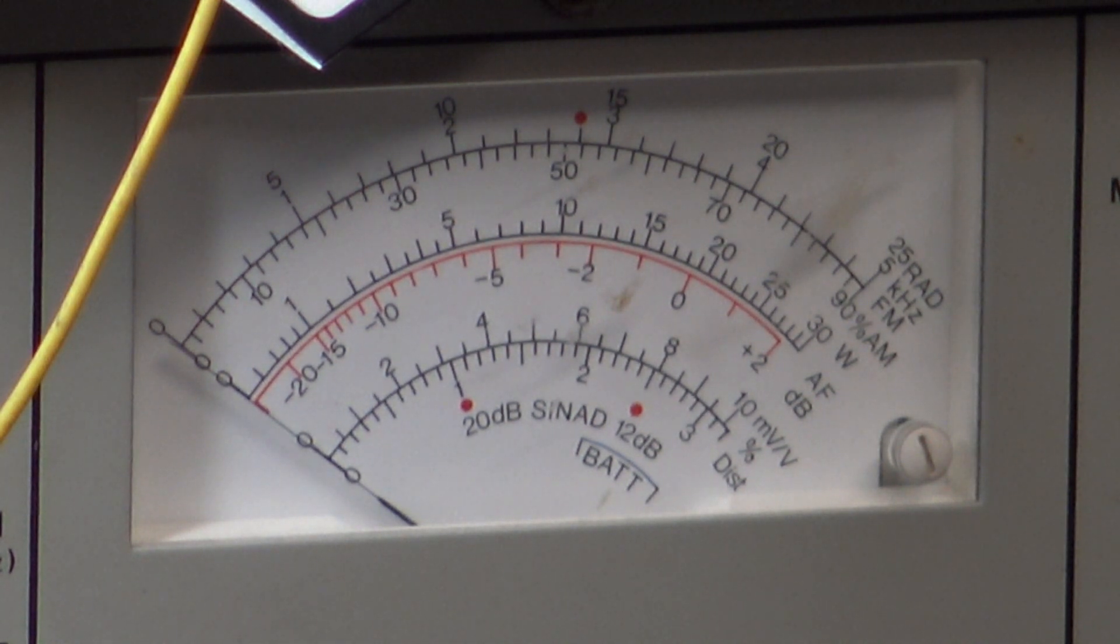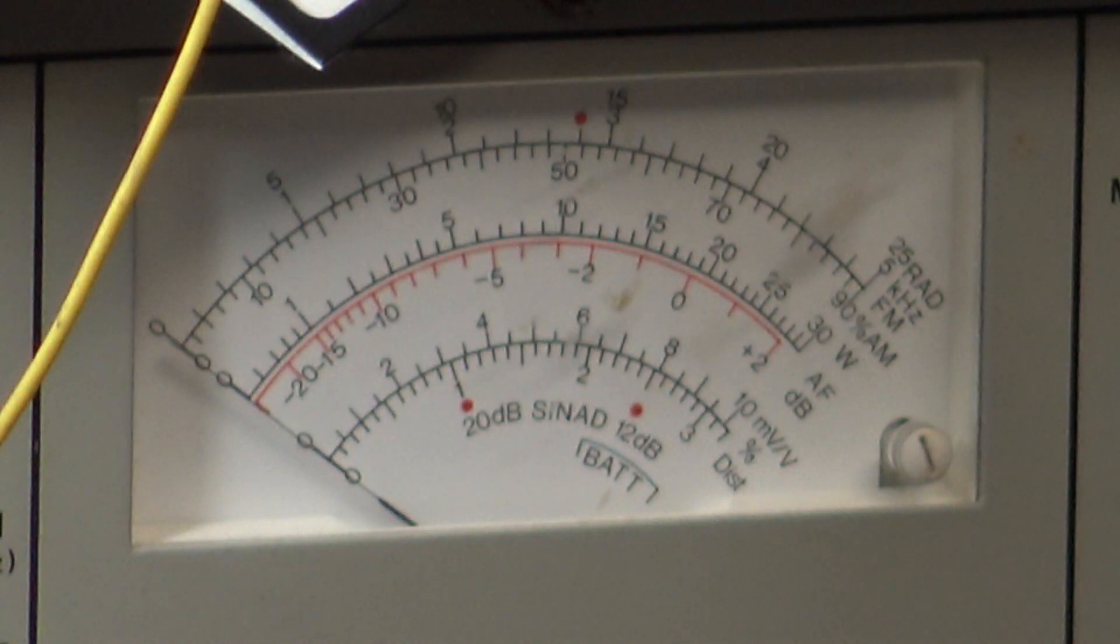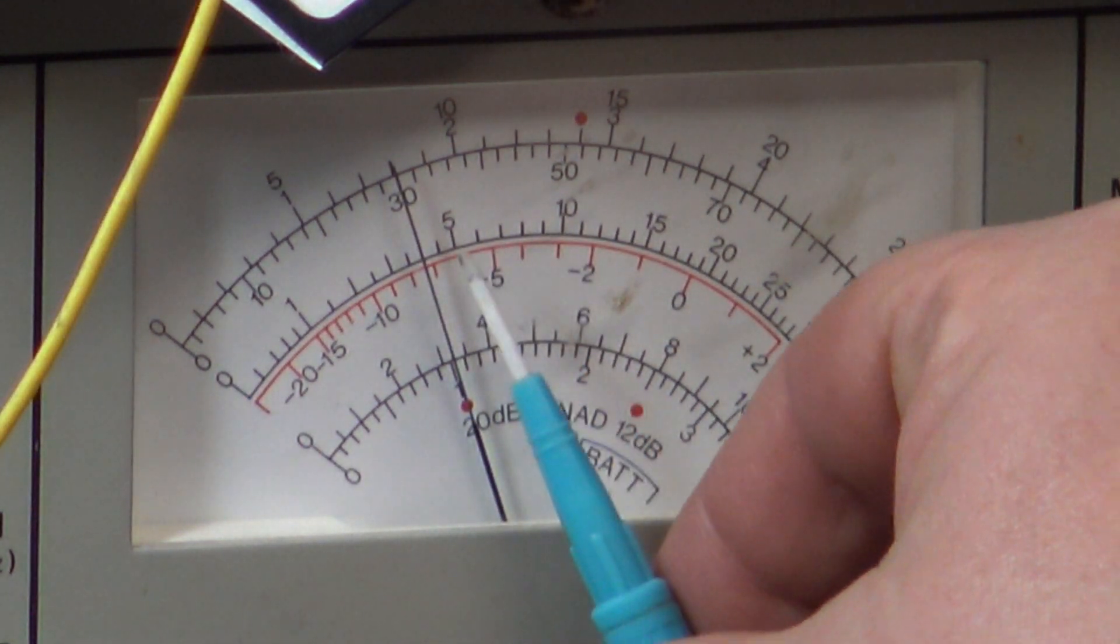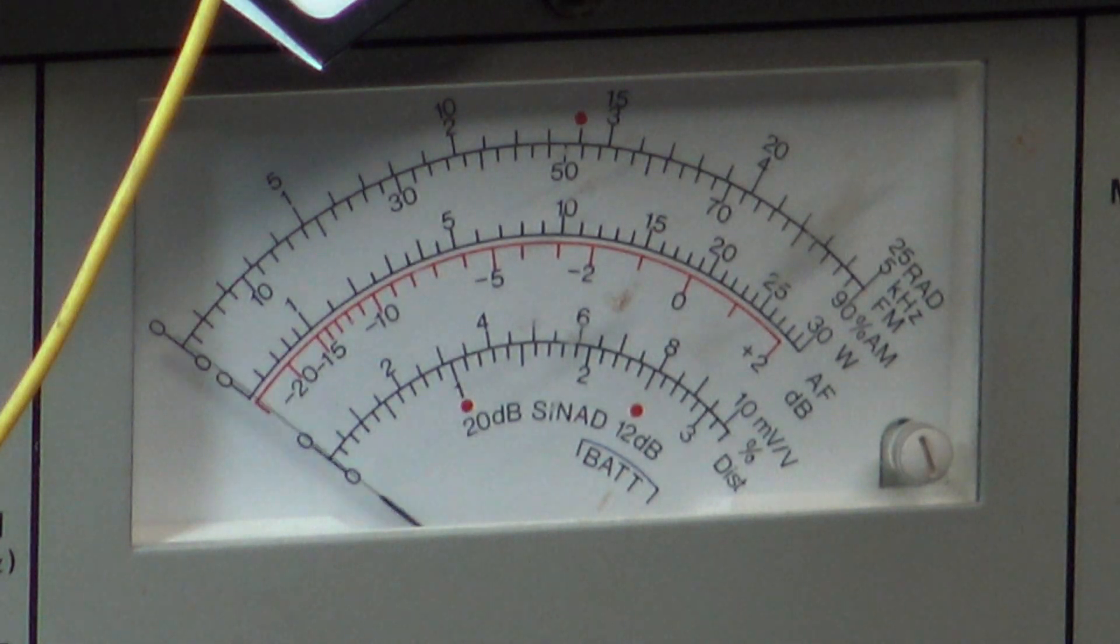So let's now change the voltage to the 14.4, which it turns out that most of our cars seem to be doing when they're charging. So now I've got 14.4 on the power supply. And the radio is now doing 3.8, 3.9 watts.